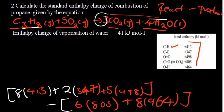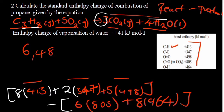Plugging in: reactants side — 8 multiplied by 413, plus 2 multiplied by 347, plus 5 multiplied by 498, giving 6,488. Minus products side — 6 multiplied by 805, plus 8 multiplied by 464, giving 8,542. So 6,488 minus 8,542 gives us negative 2,054 kilojoules per mole.